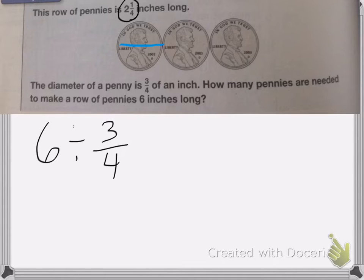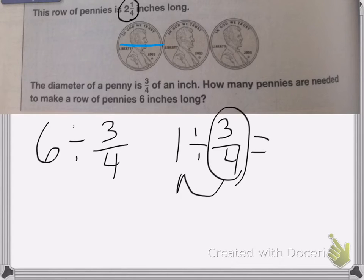So I need to know how many are in 1 inch first. So that problem will be 1 divided by 3 fourths will equal something. Now, the number of 3 fourths in 1 is going to be my reciprocal. So if you remember, the reciprocal is when we flip these two numbers. So 1 divided by 3 fourths is equal to 4 thirds.